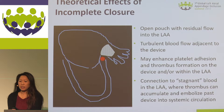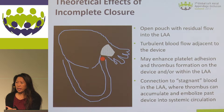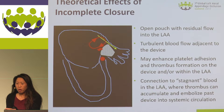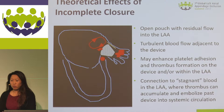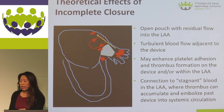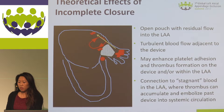Theoretically, these incomplete closures result in an open pouch with residual flow into the appendage. This can result in turbulent flow adjacent to the device and enhances platelet adhesion and thrombus formation on the device and within the atrial appendage. And this connection to this pouch can then lead to embolization of thrombus past the device into the systemic circulation.